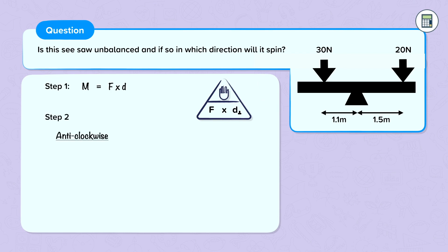Step 2: Let's keep anti-clockwise on one side and clockwise on the other. Anti-clockwise, we have our force of 30 newtons and our distance of 1.1 meters. So moment is 30 times 1.1, which is 33 newton meters.